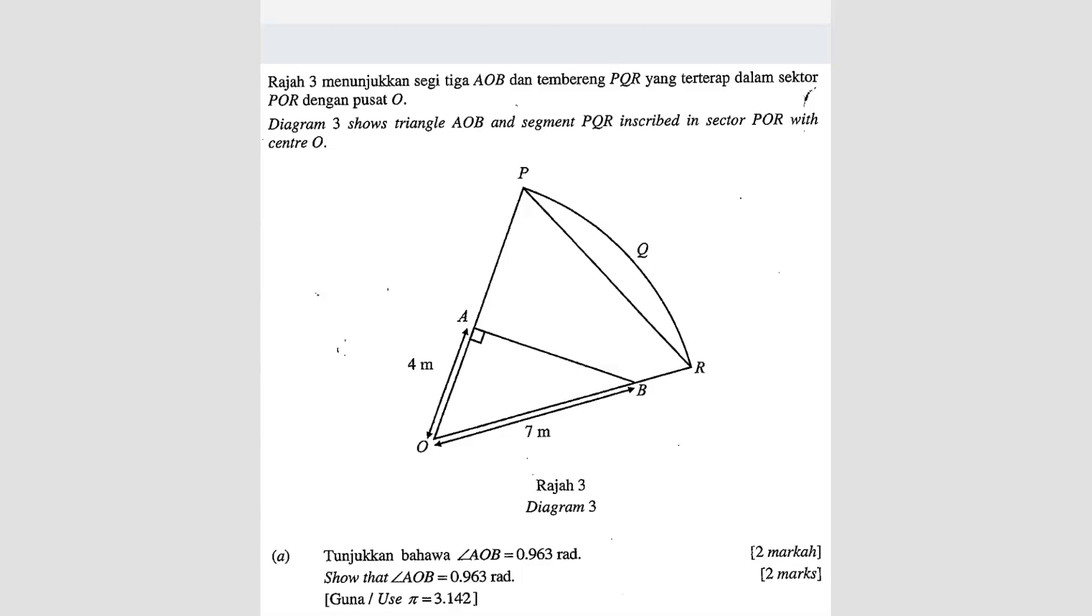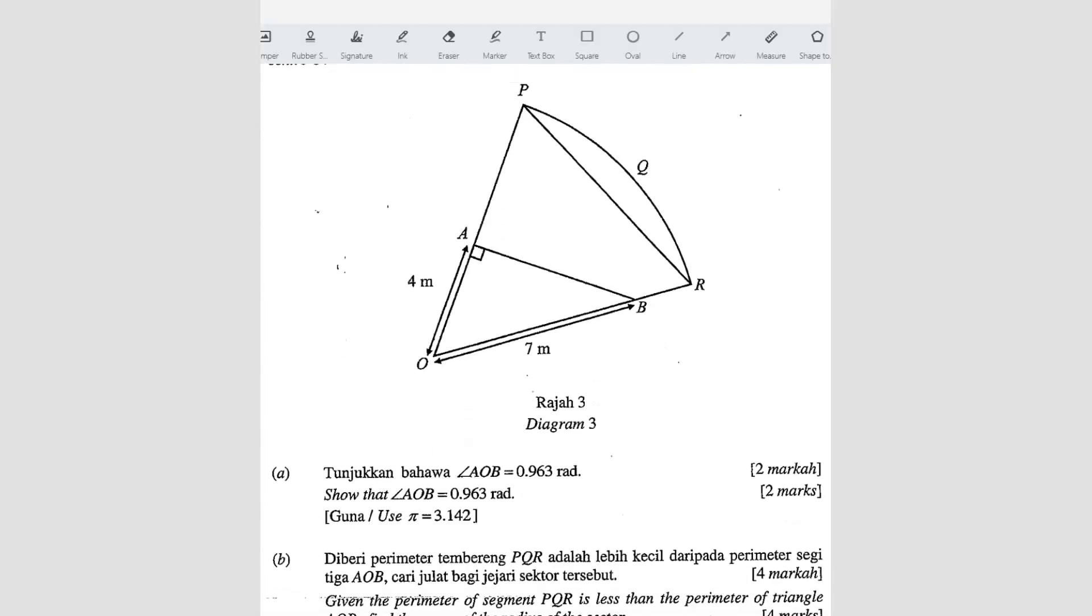Question number 6. Diagram 3 shows triangle AOB and segment PQR inscribed in sector POR with center O. So question A: Show that angle AOB is equal to 0.963 radian.